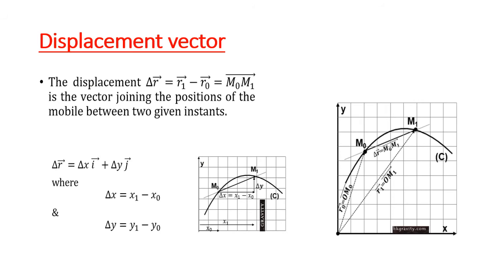Displacement vector. As we have just said, r0 equals om0, which is the position vector of the point m at t0, and om1 equals r1, which is the position vector of m at t1. Now, the vector joining m0 to m1, which is m0m1, is called the displacement vector delta r. It is the vector joining the positions of the mobile between two given instants.